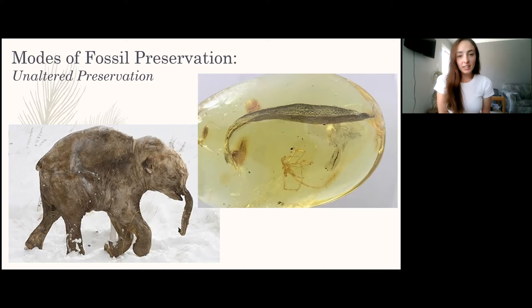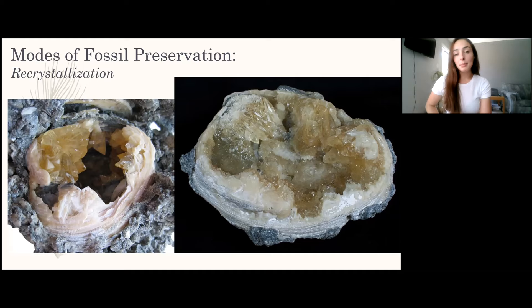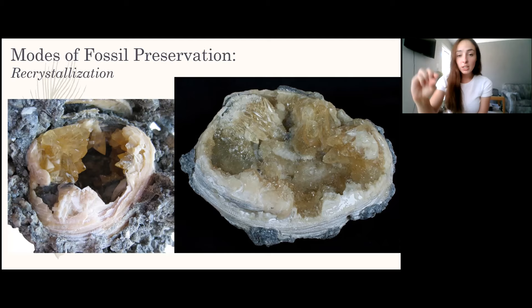Recrystallization can happen to aragonite in mollusk shells. Their shells are originally made of aragonite and can recrystallize into the more stable form, calcite — same composition but a different crystal structure. In this picture, aragonite can be seen on the outer rims of the shells with specific structures from the original shell, while the larger crystals that don't retain that structure are the recrystallized calcite.